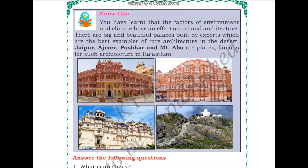The factors of environment and climate have an effect on art and architecture. There are big and beautiful palaces built by experts, which are the best examples of rare architecture in the desert. Jaipur, Ajmer, Pushkar and Mount Abu are places famous for such architecture in Rajasthan. You can find out more about them in detail if you are interested.